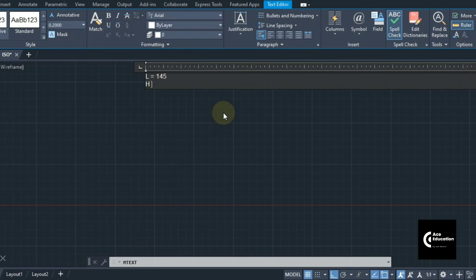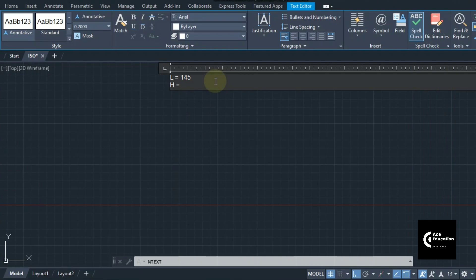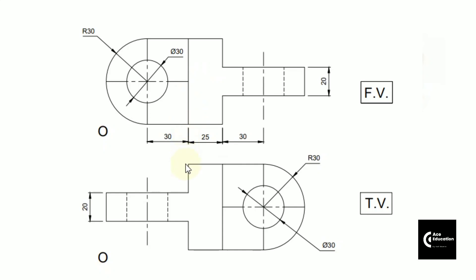The total height is the total diameter of the semicircle. Since the radius is 30, the total diameter is 60 — that is the height. And the total breadth, which you can see in the top view, is again the diameter of the semicircle, so that is R30 meaning diameter 60.